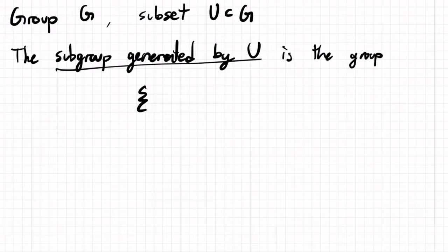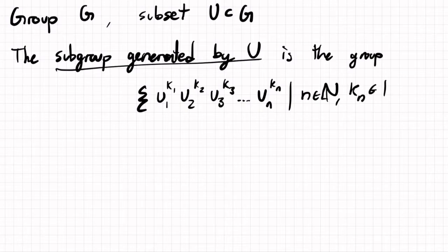It consists of U₁^k₁ U₂^k₂ U₃^k₃ ... Uₙ^kₙ, where n is some integer and k₁, k₂, ..., kₙ are also integers.